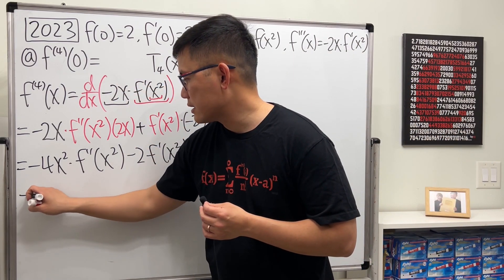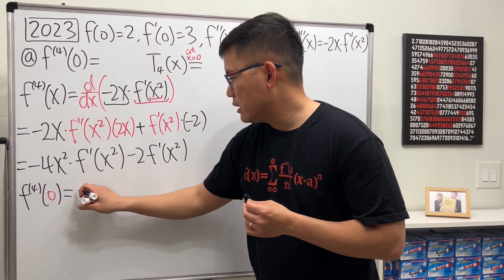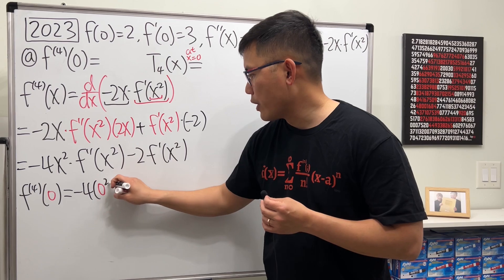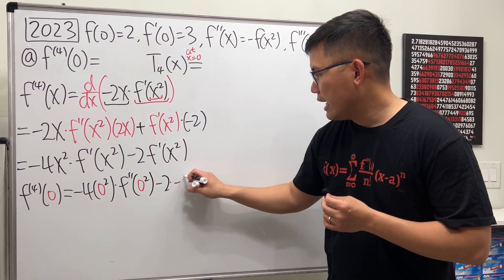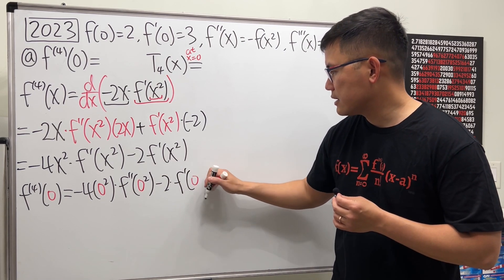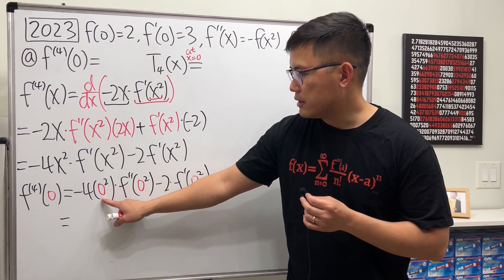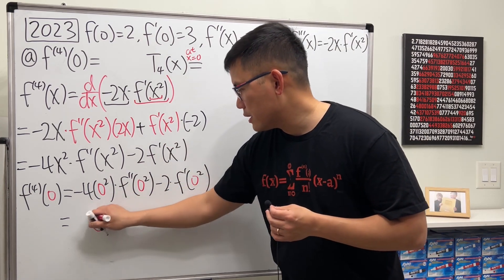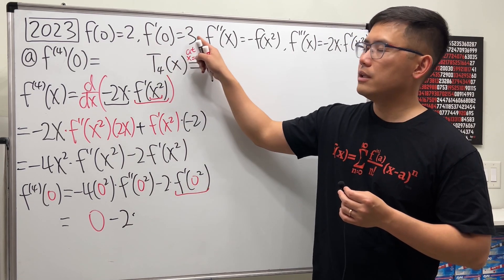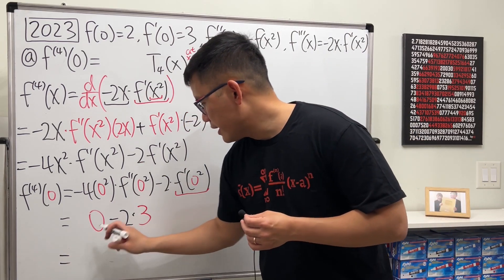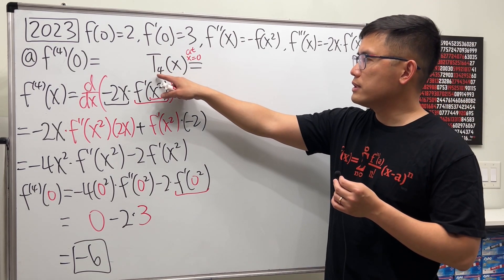Then I will plug in 0 into all the x's. So the fourth derivative at 0 equals negative 4 times 0 squared times f double prime of 0 squared, minus 2 times f prime of 0 squared. The first term has a factor of 0, so that whole term is 0. Then minus 2 times f prime of 0, which is 3. So negative 2 times 3 gives us negative 6, and we are done with that part.